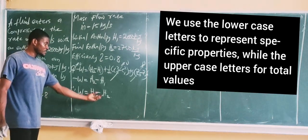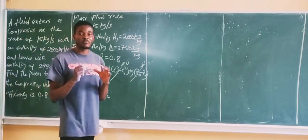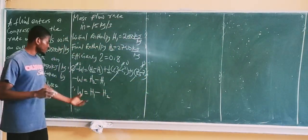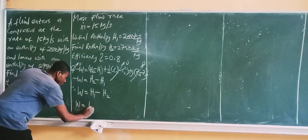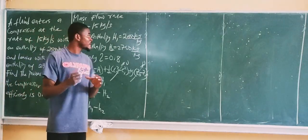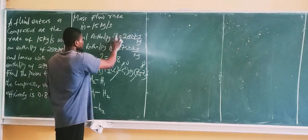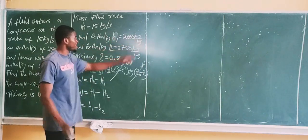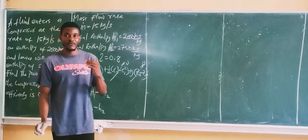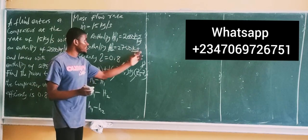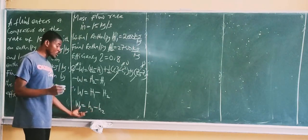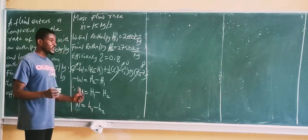Note that H1 and H2 here are specific properties — specific enthalpy. Specific properties are those that depend on mass. That is why the units are kJ per kg. When you multiply specific enthalpy by mass, you obtain the total enthalpy value. So work done is simply specific enthalpy H1 minus specific enthalpy H2. If this work done is negative, you have a compressor; if positive, you have a turbine.